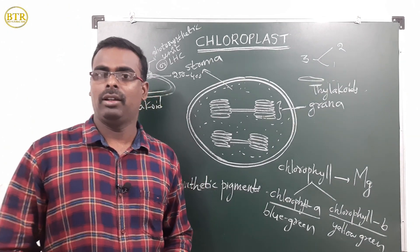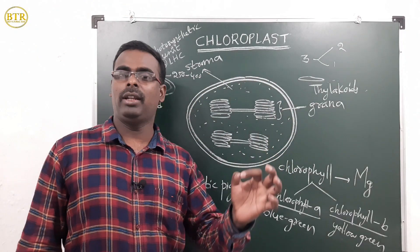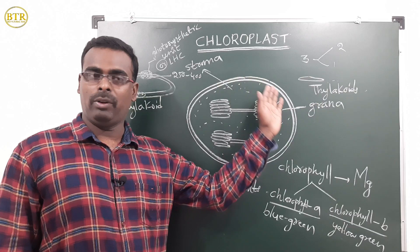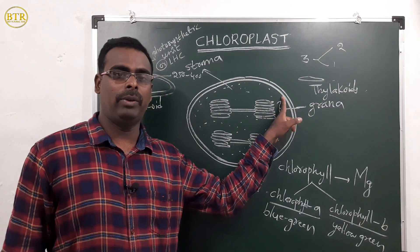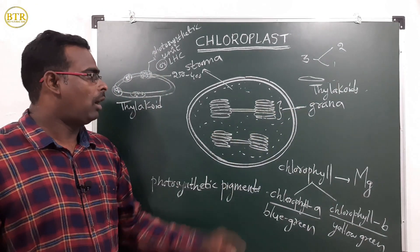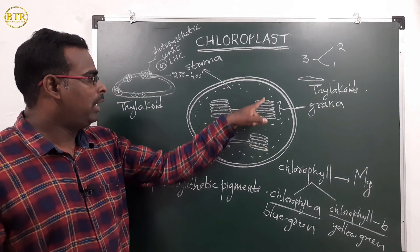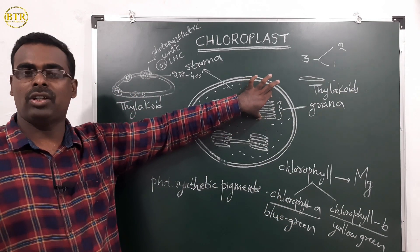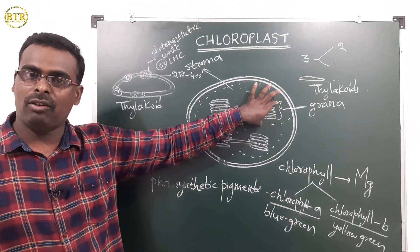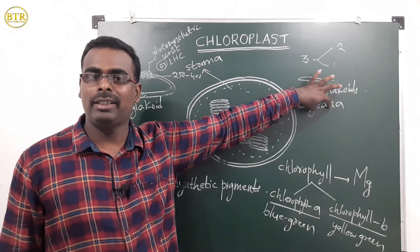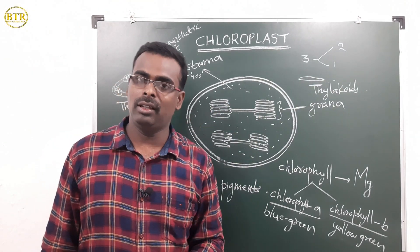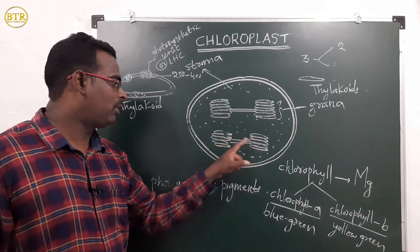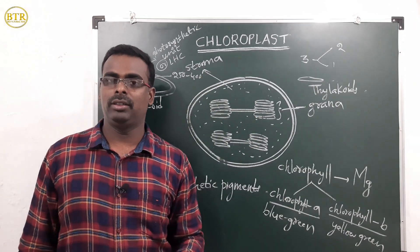Let us recap the chloroplast structure. Chloroplast is a membranous structure covered by two membranes: the outer membrane and the inner membrane. The third membrane forms many sac-like structures called thylakoids. A stack of thylakoids is called grana. Note: grana is the plural word; granum is the singular. Many granas are found inside the chloroplast.